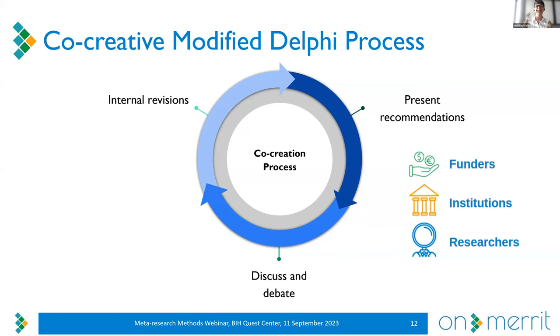Thanks, Tony. So as Tony said, we merged co-creative interactional practices with a traditional Delphi structure, and we followed an iterative procedure as you would with a standard Delphi. This figure represents the process and its iterative nature. We actually began not by presenting recommendations but by gathering them, and we went through three rounds of iterations: first gathering recommendations, fostering discussion and debate around them, going through internal synthesis and revisions, and then presenting a new set of recommendations to go through the process once again.